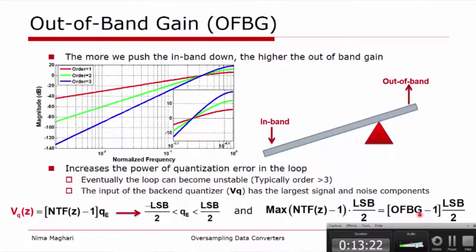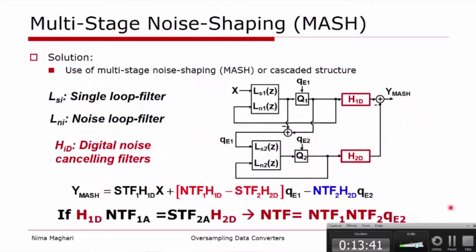And it can be achieved with this operation. So the maximum out-of-band gain minus 1 times LSB over 2, and if this ends up being larger than the linear range of the quantization error, the loop becomes unstable. So we should always have a good analysis on the stability of the modulator, given that anything typically higher than third order runs into stability problems.